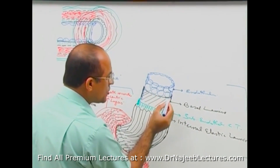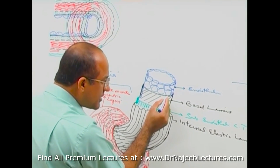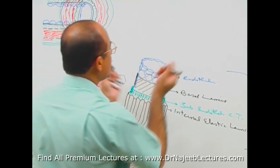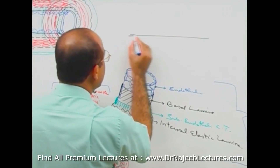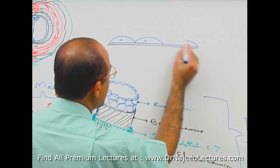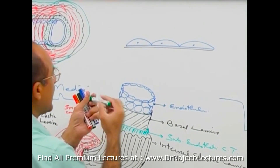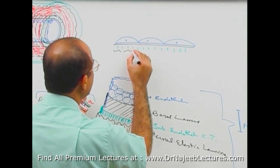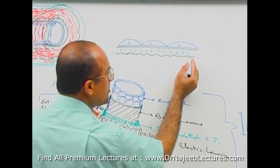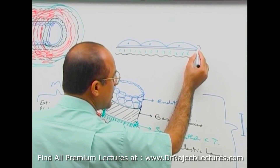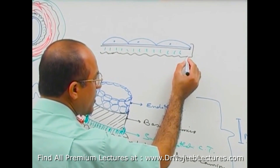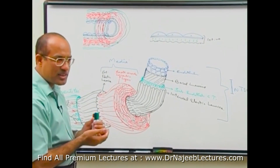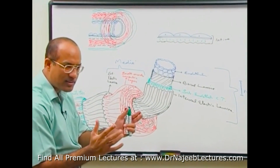To clarify the layers: the endothelial cell rests on the basal lamina, and beneath the endothelial cell and basal lamina is a small amount of connective tissue called subendothelial connective tissue. Then comes the wavy internal elastic lamina. Together — endothelium with basal lamina, subendothelial connective tissue, and internal elastic lamina — all of these form the intima, the layer most intimate with the blood.